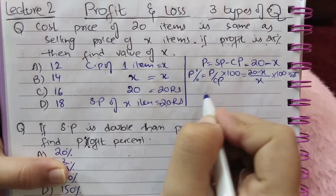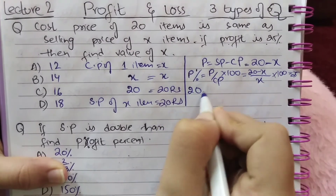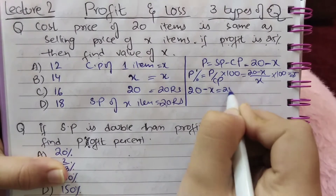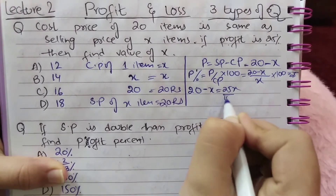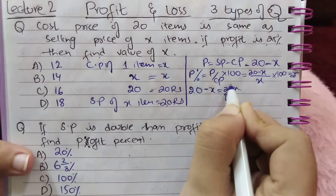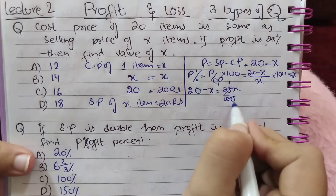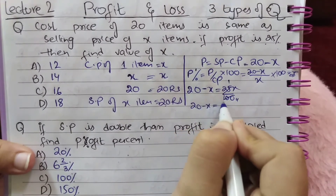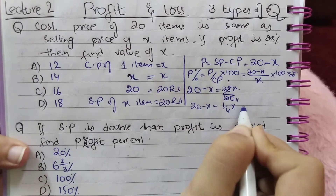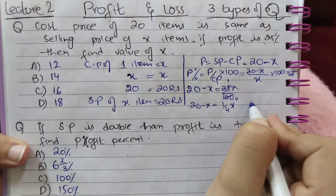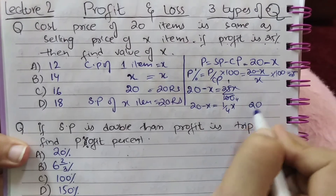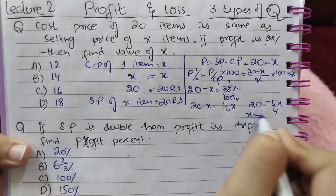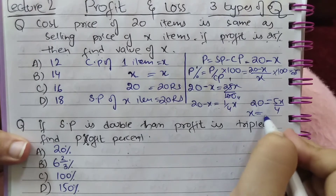Rearranging: 20 − x = (25/100) × x = x/4. Moving x to the other side: 20 = x + x/4 = 5x/4. This implies x = 16.